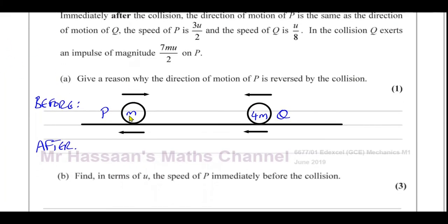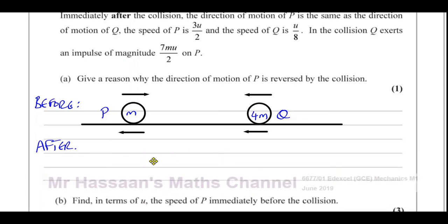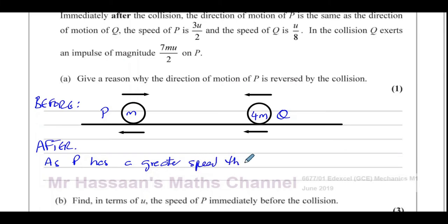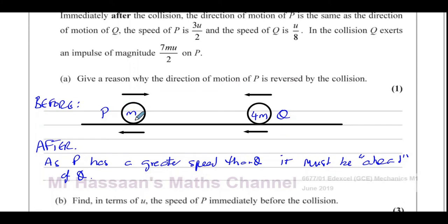You can say: as P has a greater speed than Q, it must be ahead of Q, not behind it. If P's motion had been reversed and it was slower than Q, that wouldn't make sense because Q would be faster and behind it. So since P is faster after the collision, it must be in front — that makes sense.